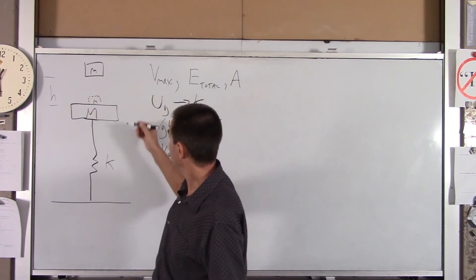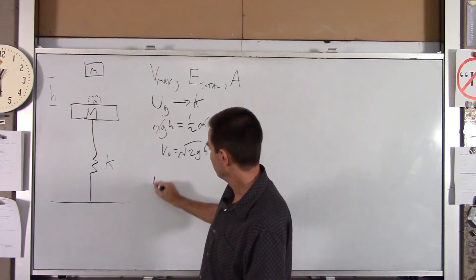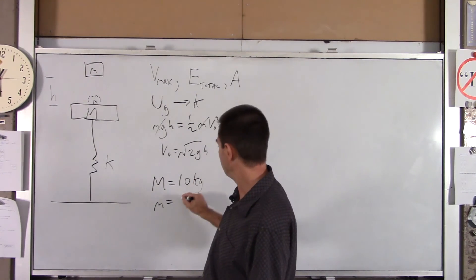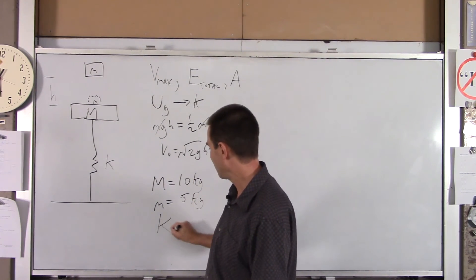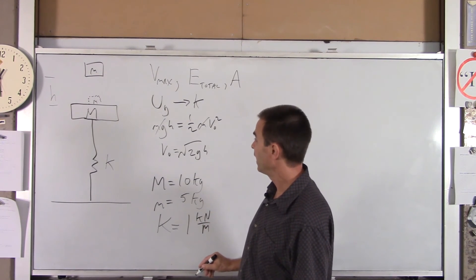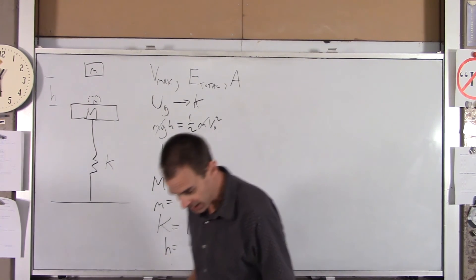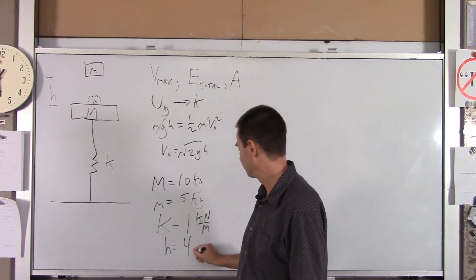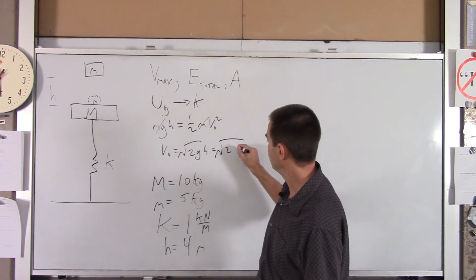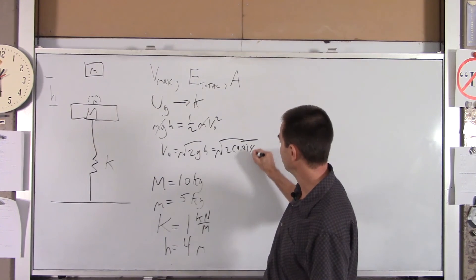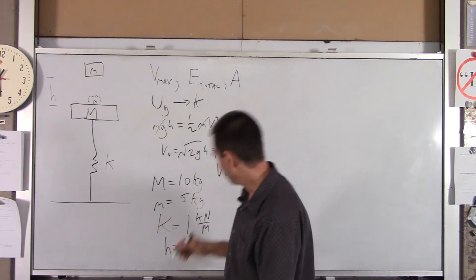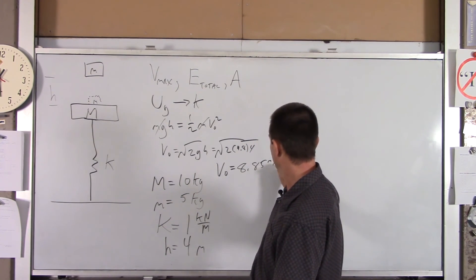Here are the values: big M is 10 kilograms, little m is 5 kilograms, the spring constant is 1 kilonewton per meter (1000 N/m), and the drop height is 4 meters. So V-naught equals root of 2 times 9.8 times 4, which gives V-naught equals 8.85 meters per second. That's the velocity the little guy has right before impact.